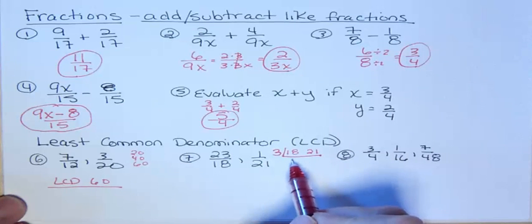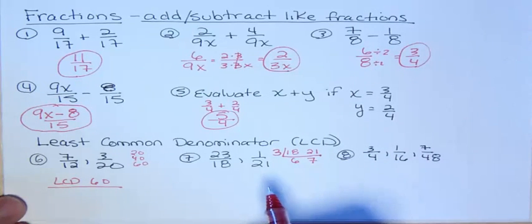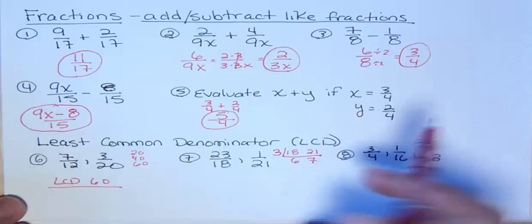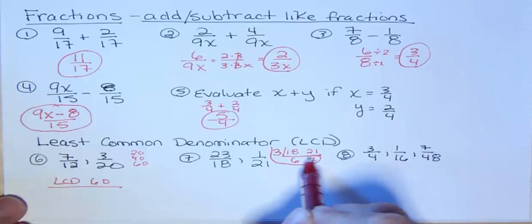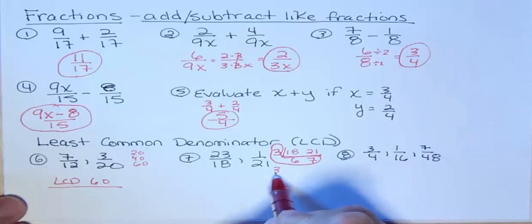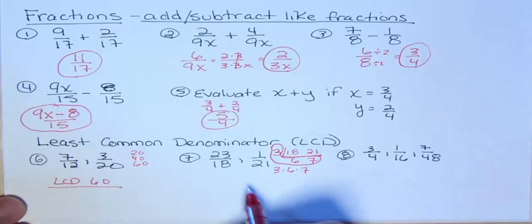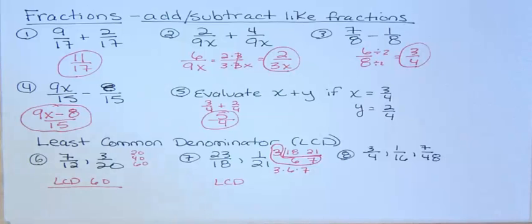3 goes into 18 six times. 3 goes into 21 seven times. Now there's nothing that goes into both 6 and 7 besides 1, which doesn't help. So we're just going to multiply everything in our L for LCD. 3 times 6 times 7 is going to give us our least common denominator. It's a totally different method, but it works just as well.